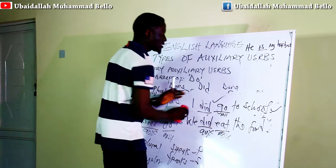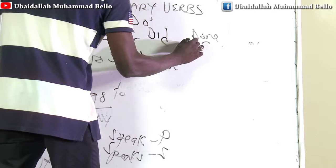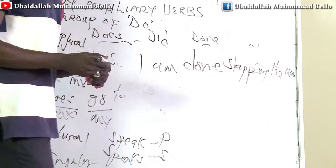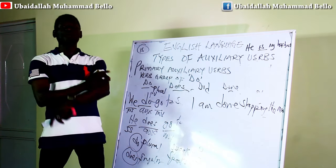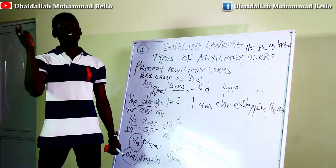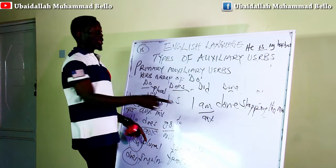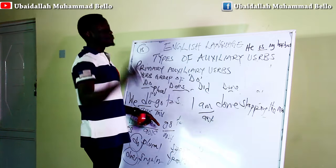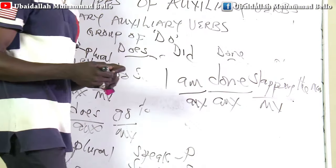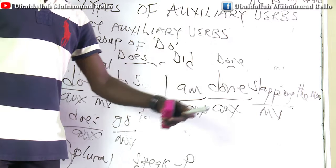The last item in this category is 'done.' Let's see how 'done' functions as an auxiliary. Somebody would say: 'I am done slapping the mind.' How many verbs do we have? There are three verbs — they are not all main verbs nor all auxiliary verbs. The last one is the main verb. 'Am' is auxiliary under the verb group of 'be,' 'done' is also auxiliary under the group of 'do,' and 'slapping' is our main verb as the head of this verb phrase.